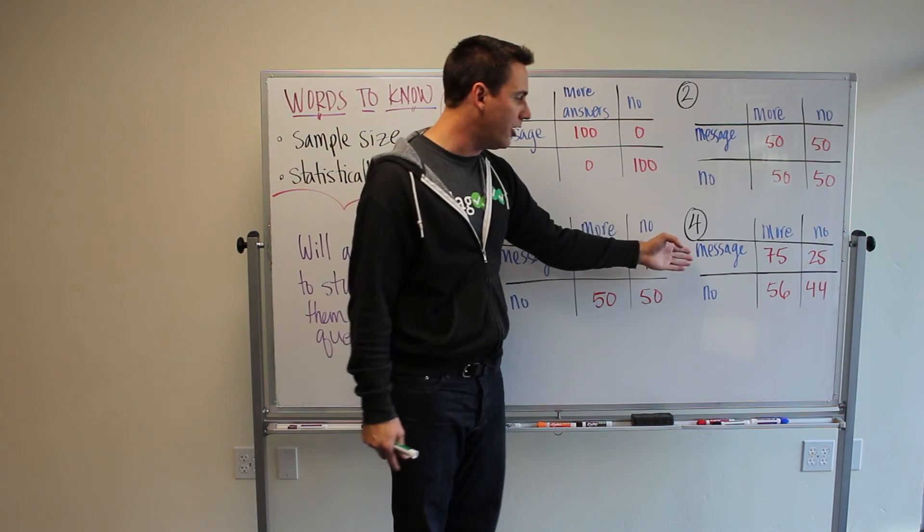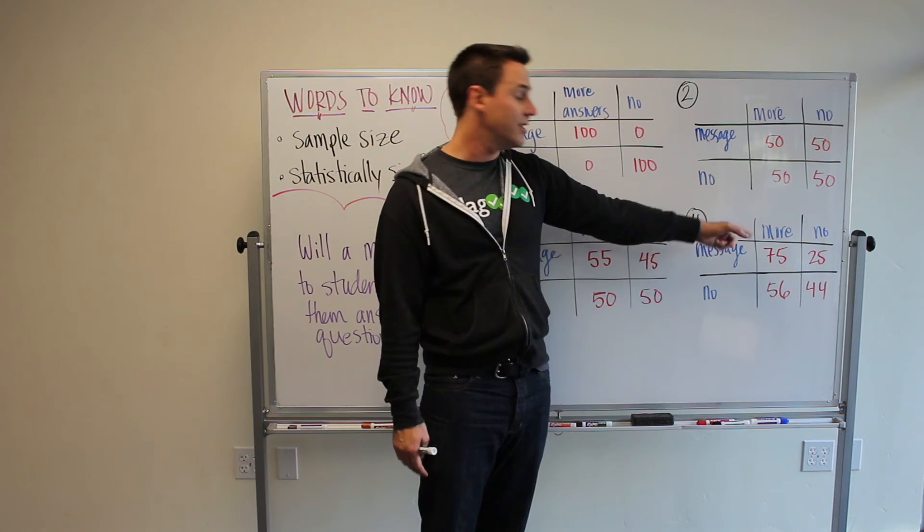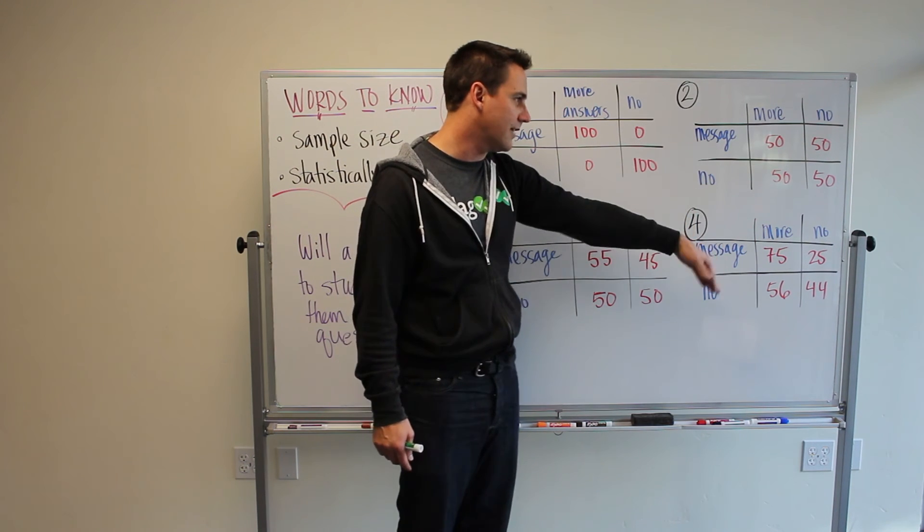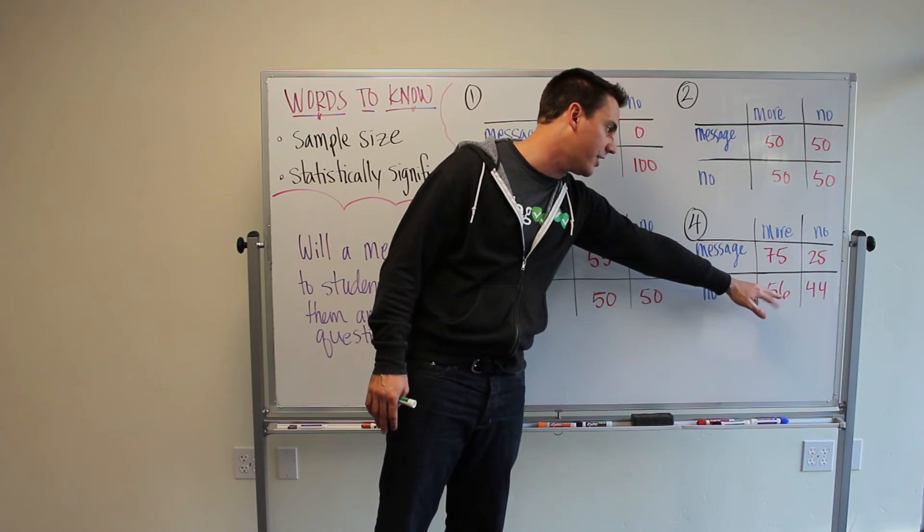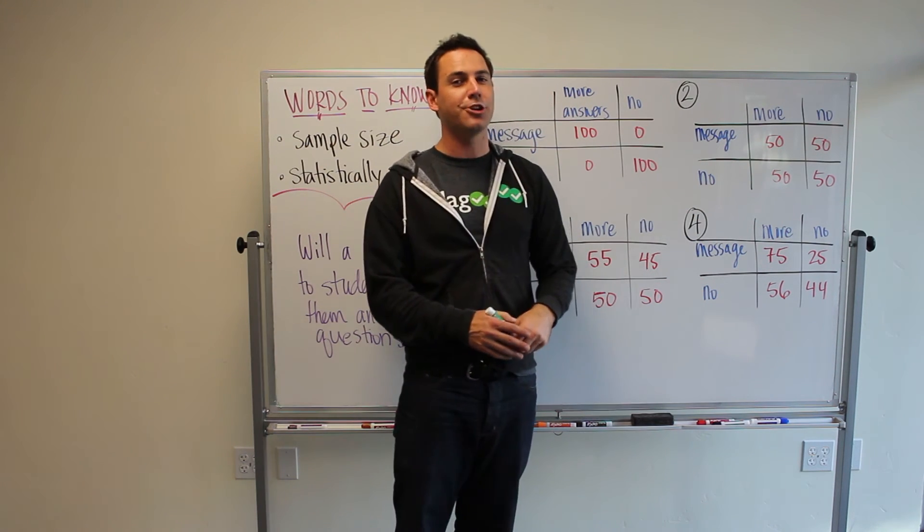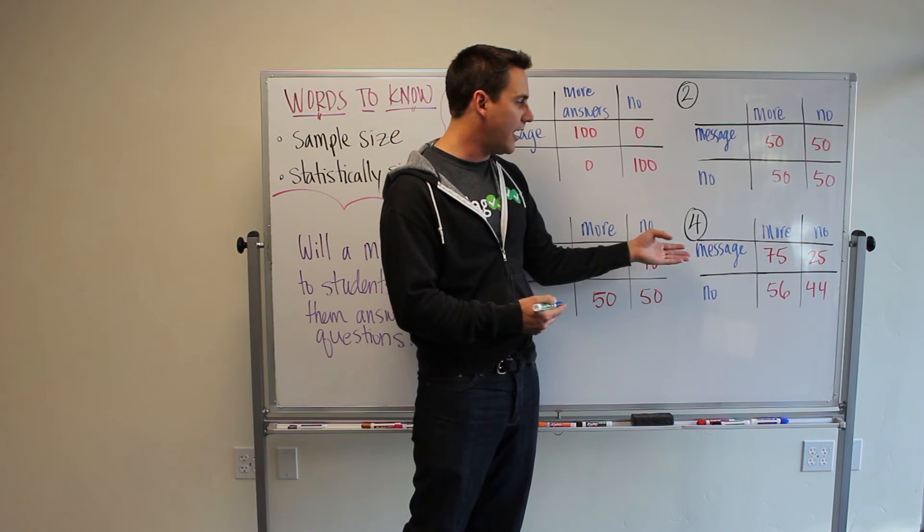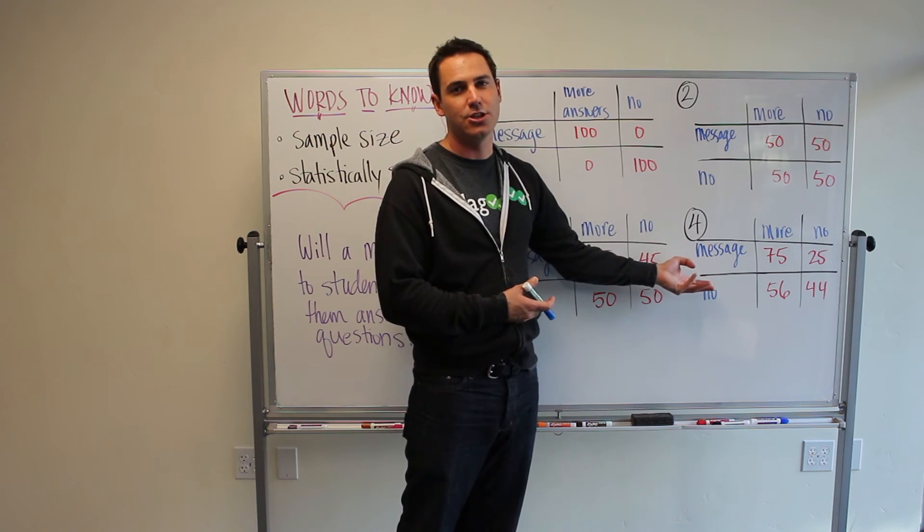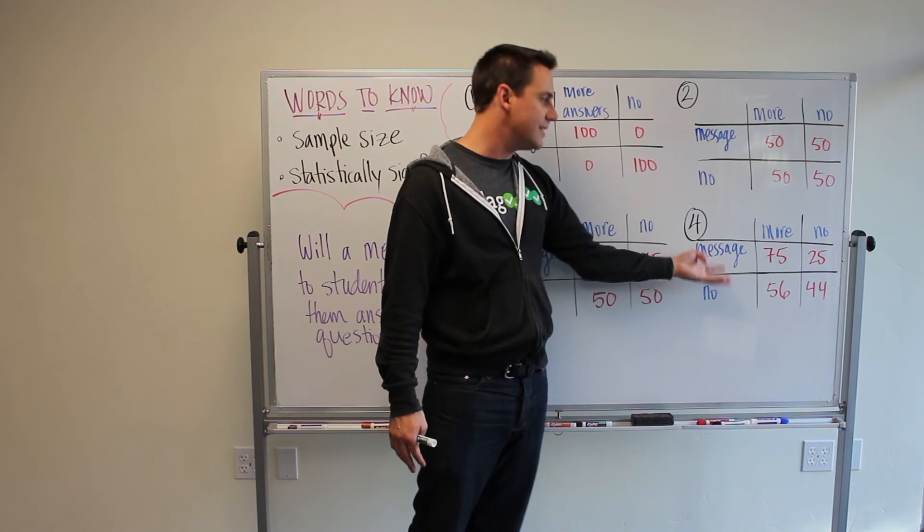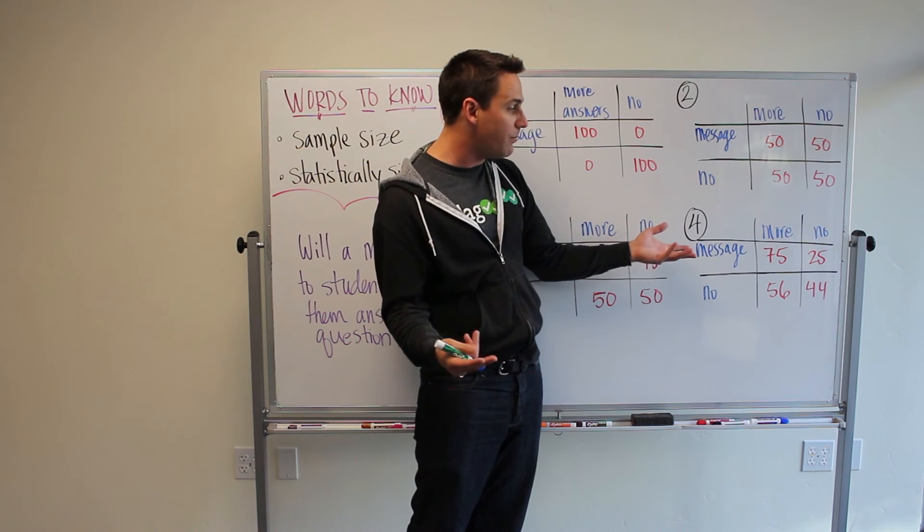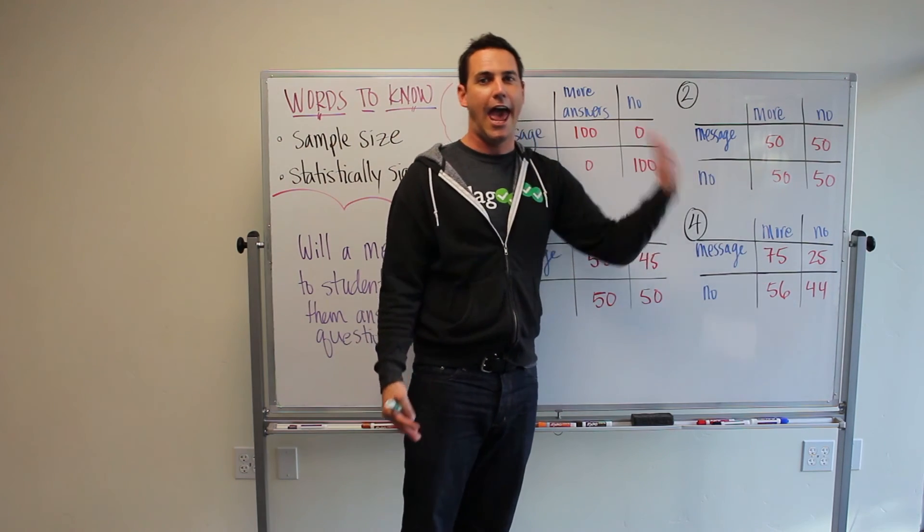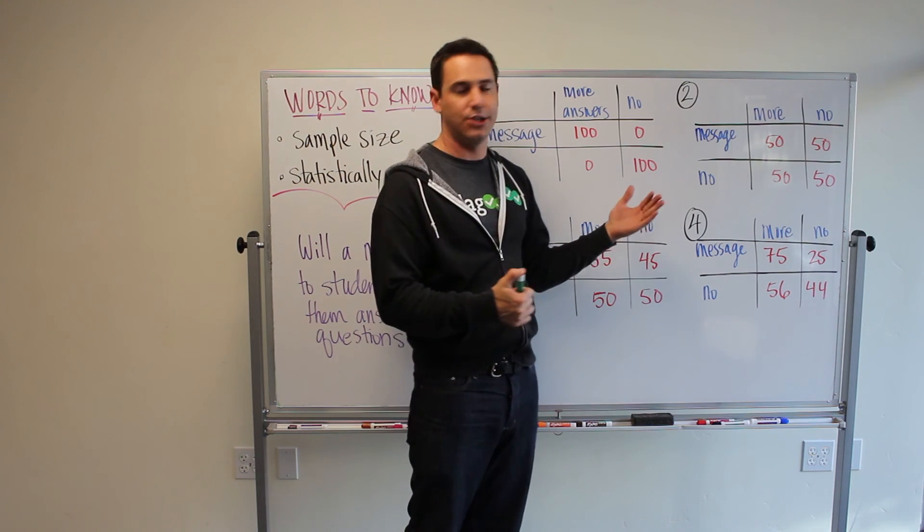But if we look at scenario number four, again, 100, 100. So of the people who got the message, 75 answered more questions. Of the people who didn't, only 25 answered more questions. Or didn't answer more questions. And if you didn't get the message, the people answered about 56 more. Or 56 people answered more questions, 44 did not. Now, this is more interesting and statistically significant because it seems that getting the message did increase the amount of people who answered questions. So this is more interesting. It is possible that it's still by chance, but the likelihood is very low. And there's actually calculations that scientists will run to know what is the probability of this result happening by chance. You won't need to do that on the GMAT, but it is good to know.